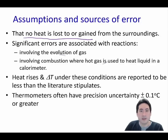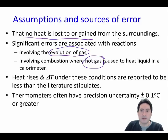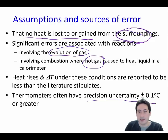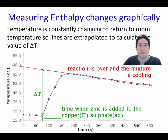Key sources of error: the most important is heat lost or gained. Heat can be gained from external heating sources, and there could be a loss of gas representing a loss of energy. In most cases the measured temperature change is less than expected because the surroundings and the calorimeter itself absorb heat. Also consider the precision of your thermometer.